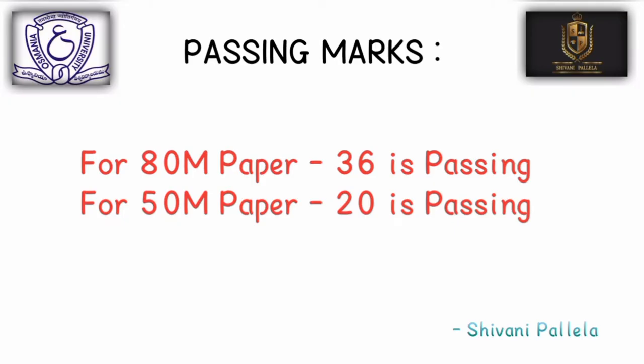In the question paper, 36 marks out of 100 is the passing mark for theory papers. For some papers that carry only 50 marks — such as Cyber Security, E-Commerce, Web Technologies, and C Language — the passing marks are 20 out of 50. So when the question paper is 50 marks, 20 is the passing mark; when it is 80 marks in the external, 36 is the passing mark. Internal examination attendance at college is also required.